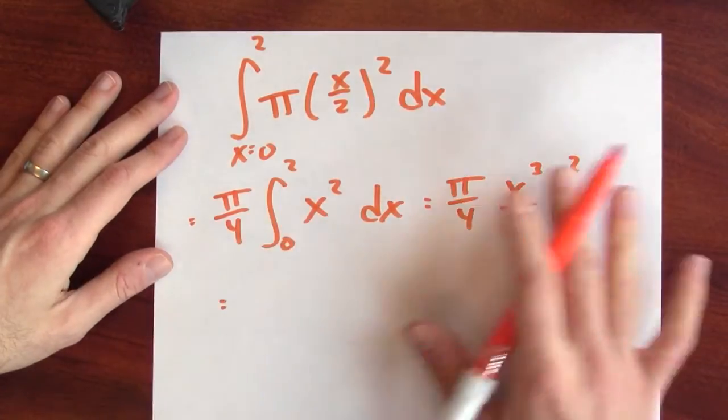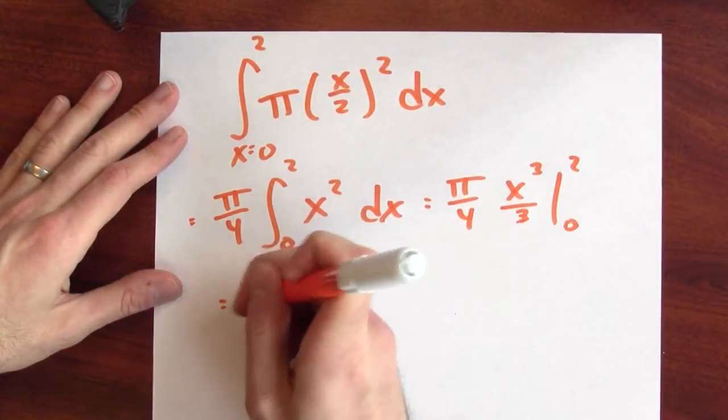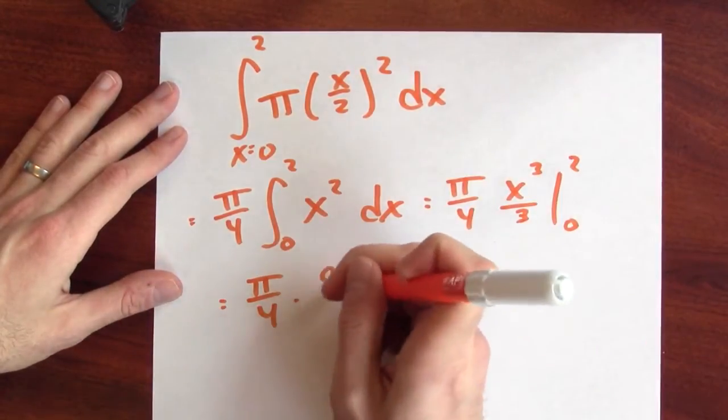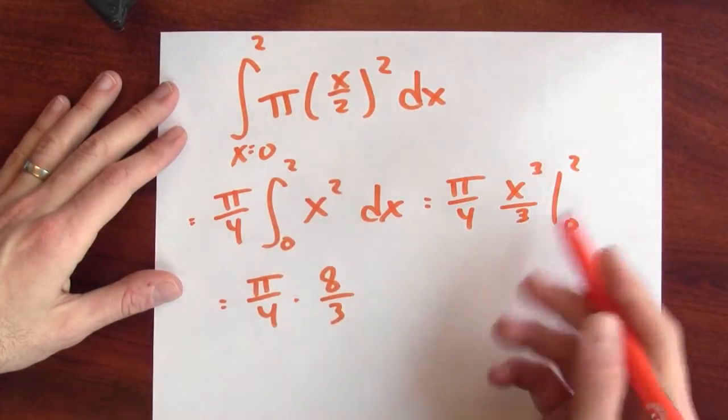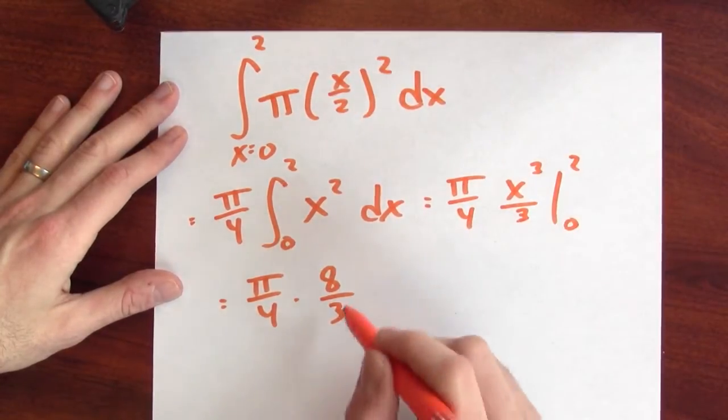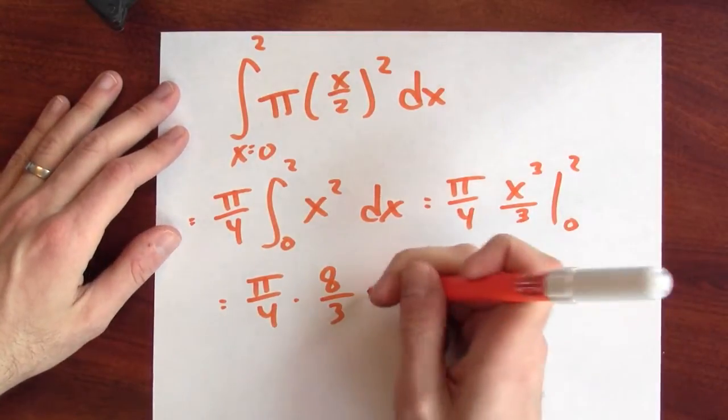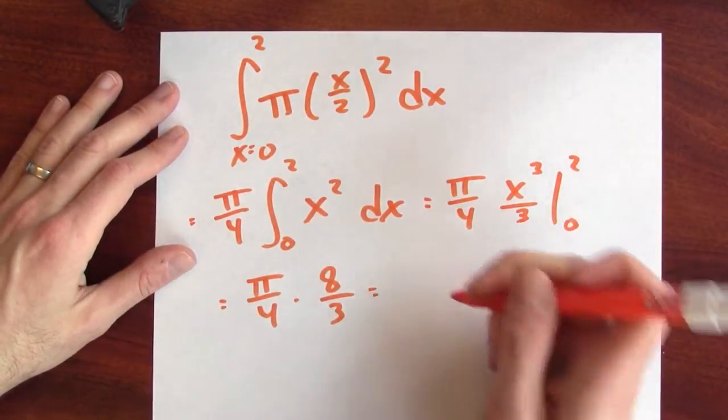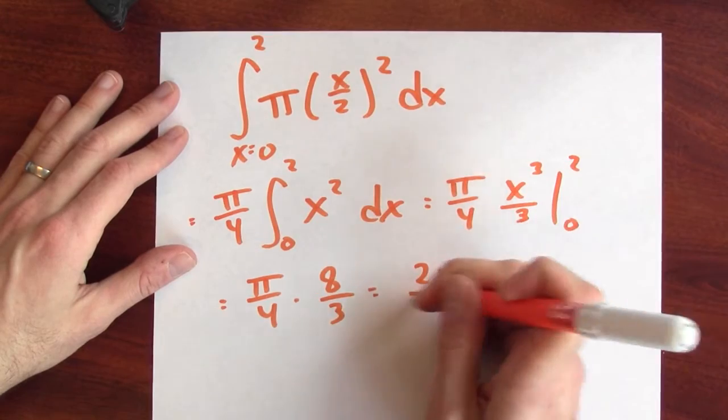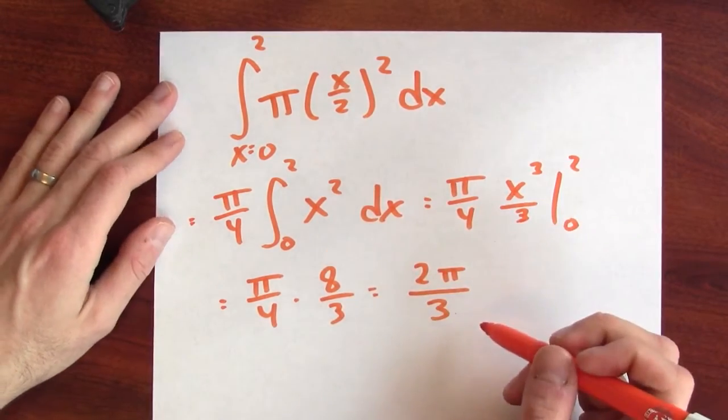So when I plug in 0, I don't get anything. But when I plug in 2, I get 8, it's 2 cubed over 3, and then minus 0. So this is the volume of the cone, which I could simplify somewhat. I could write this as 2 times pi over 3. We did it!